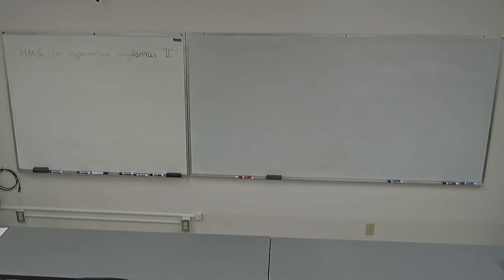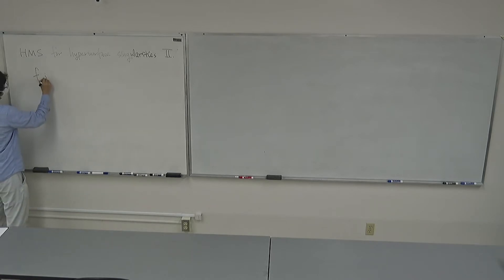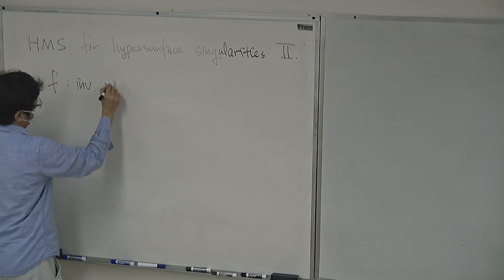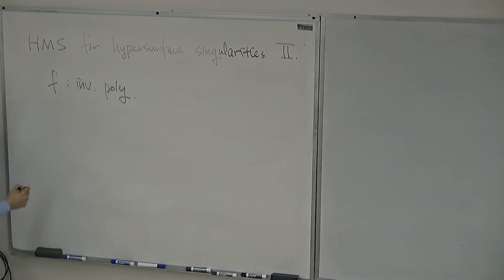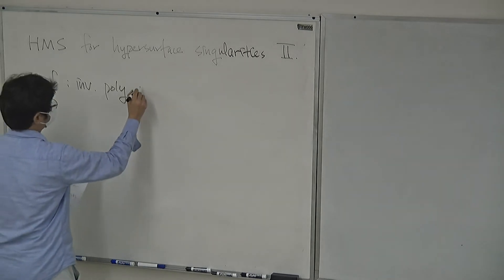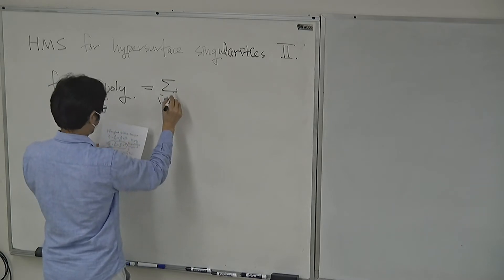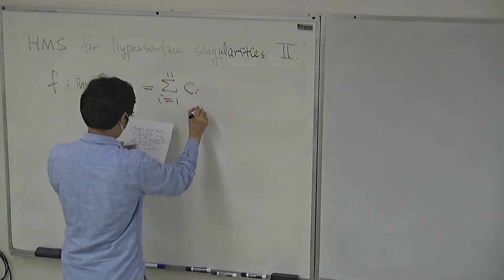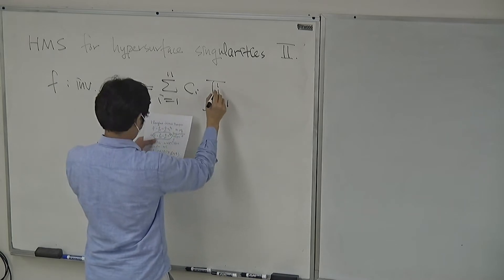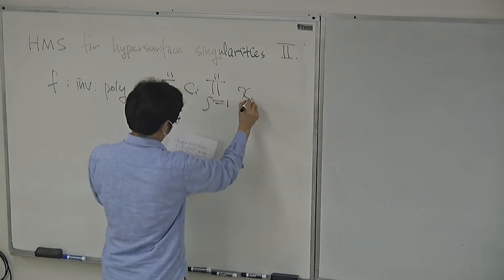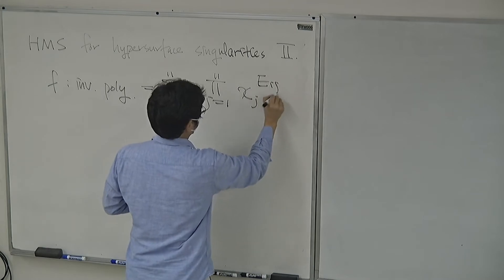Last time we discussed the Berglund-Hübsch-Henningsen duality. Let me recall it. When I have this invertible polynomial, it is written in this way: a sum from j equals 1 to n of x to the d, x_j, E_{i,j}.